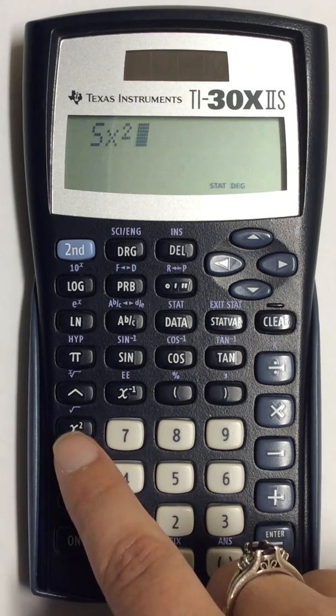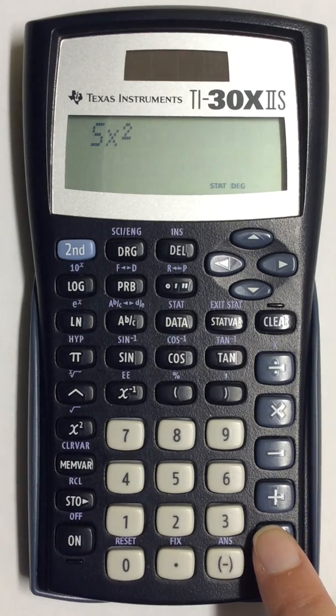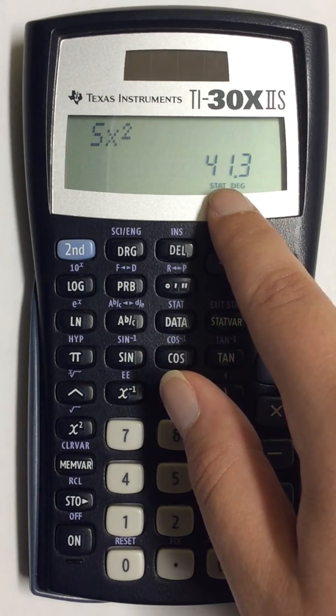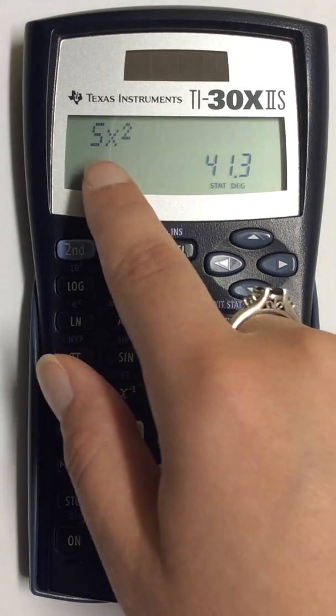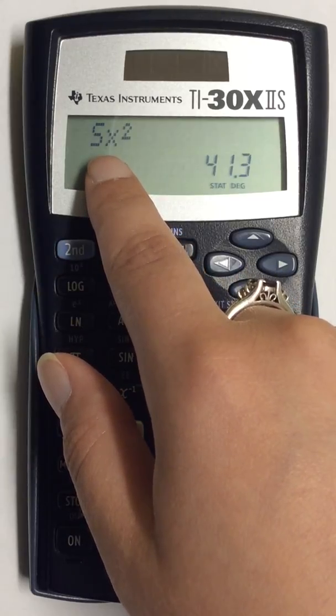So after you press the squared button hit enter and this number on the screen will give you variance. You can do this for both sample standard deviation and population standard deviation.